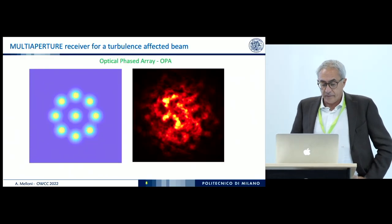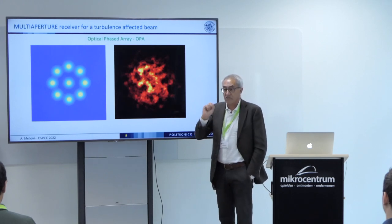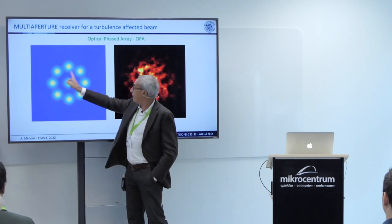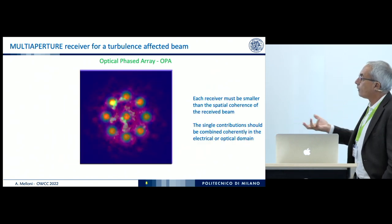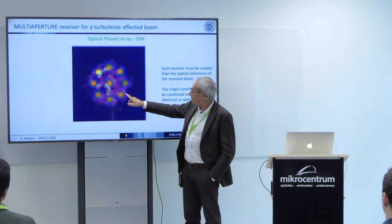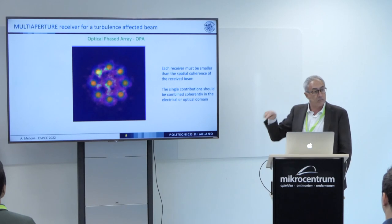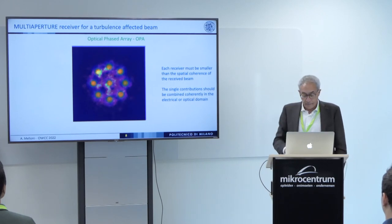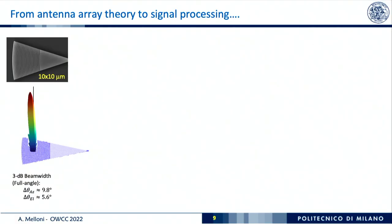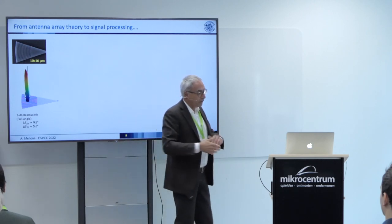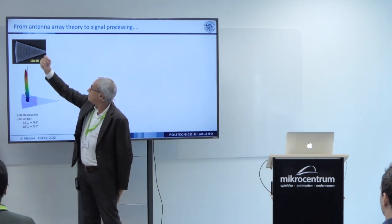One possibility is to sample the incoming beam not just with one receiver or antenna, but with many — a multiple aperture receiver that samples the beam and collects small parts of it. Each part is coherent within itself, but not coherent between the various points. In optics, a single aperture is typically a grating coupler, and then we go on a photonic chip. This is a typical grating coupler — 10 by 10 microns — and it works also with free space. You need to put a lens in front to concentrate the field.